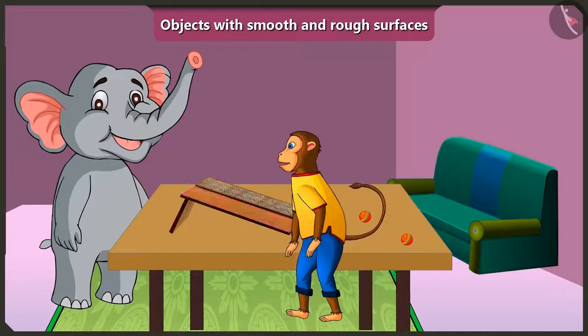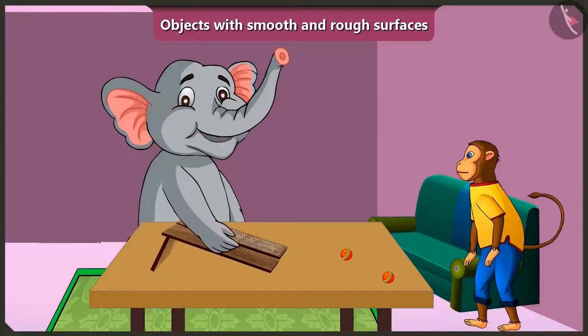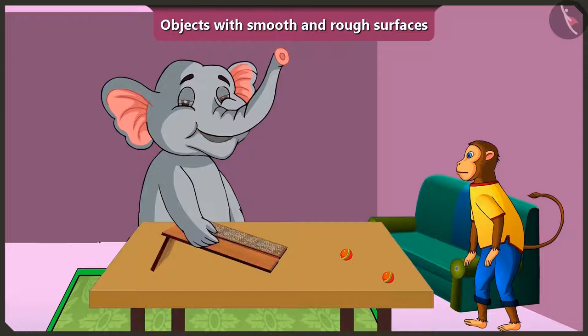We also call them smooth surfaced. Now look at this slope. Its slope is very rough. Now come, touch it and feel it. Hmm, my hand is sliding on this. Its surface is very smooth.